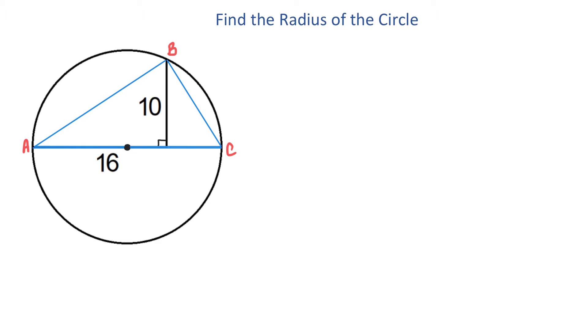Then, in such a triangle, this angle is always a right angle. To understand why this angle is a 90-degree angle, let's review the definition of inscribed angles.